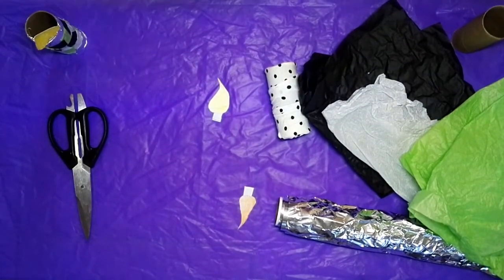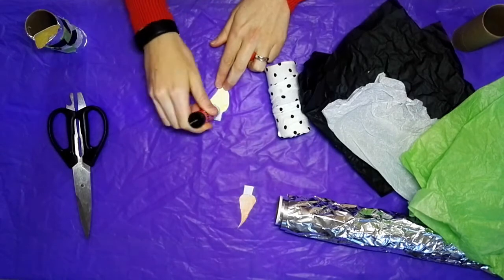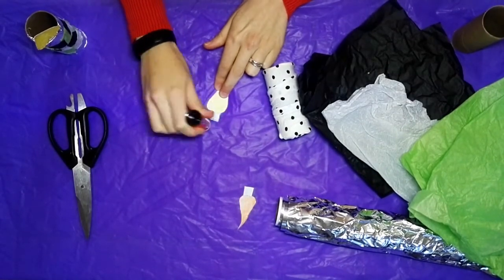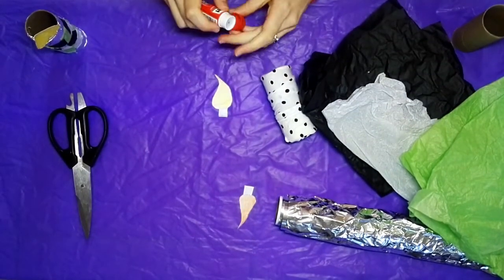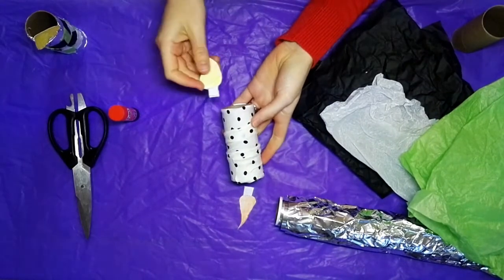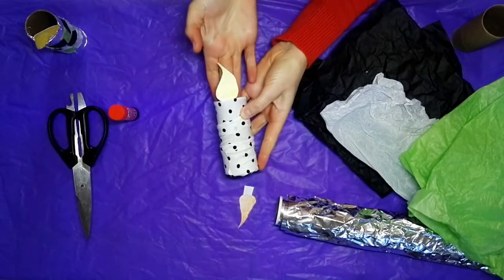So you want to spread it pretty liberally if you're using a stick glue like I am. You could use liquid glue or hot glue if you wanted to, and then once you've got your glue on you are just going to press it into the front of your candle there.